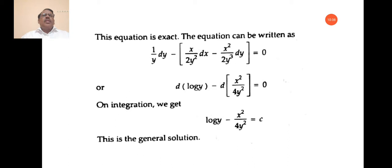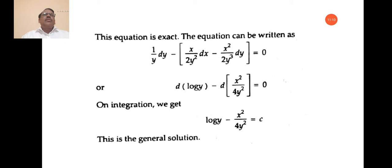So if the given equation is not exact, observe whether M and N are homogeneous functions of the same degree. Then find Mx + Ny, which should not equal 0. Then 1 by (Mx + Ny) is the integrating factor. Multiply the given equation by it and this becomes an exact differential equation. Then solve by grouping method or direct solution method.